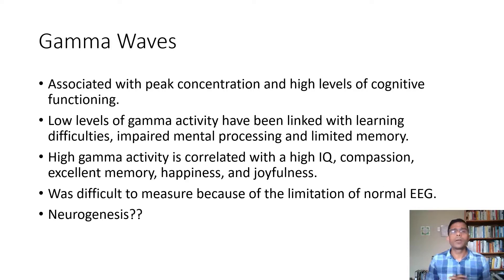It's about peak concentration, high level of cognitive functioning. Those are the times that we observe gamma waves. We tend to see more gamma waves amongst people who have a higher IQ, as well as in people who are more compassionate, or during the times that you are extremely compassionate. If you have sufficient number of gamma waves in your brain, then that is also associated with having excellent memory. I've already mentioned about being happy, joyful.